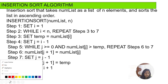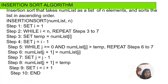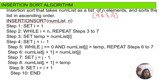Now let us see the algorithm. The name of the function is insertion sort, passing two arguments: numlist and n. numlist is the name of the list and n is the length of the list. Let me take an example: [9, 8, 3, 10]. Set i equal to 1. i is pointing to index 1, and i also deals with pass 1, pass 2 — it is the outer loop variable.